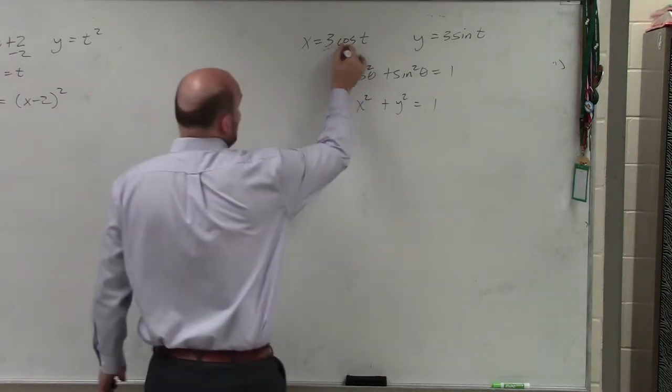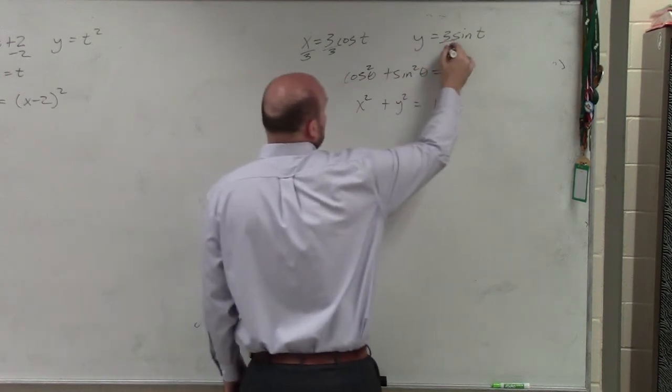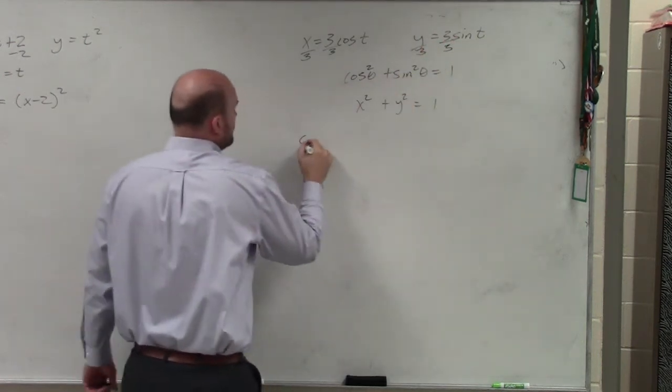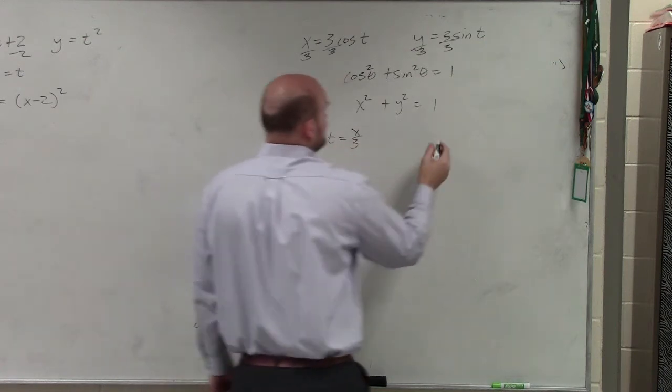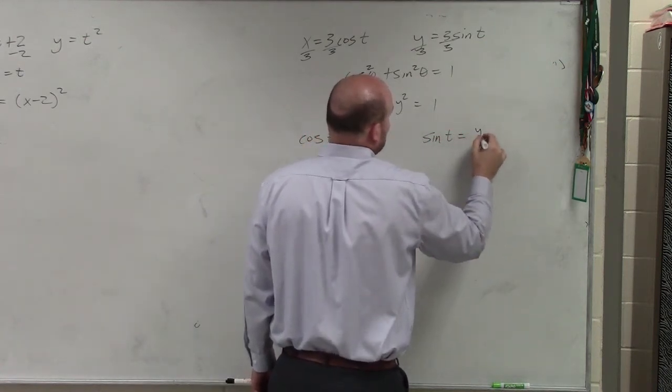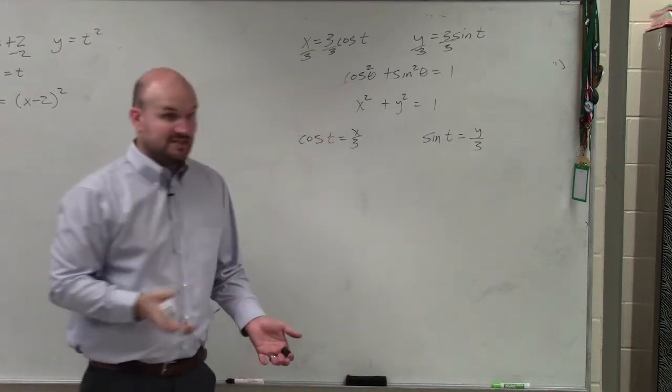So all we need to do for that is just divide by three. Divide by three. So cosine of t equals x over three. That was really loud. Sine of t equals y over three. Would you guys agree with me?